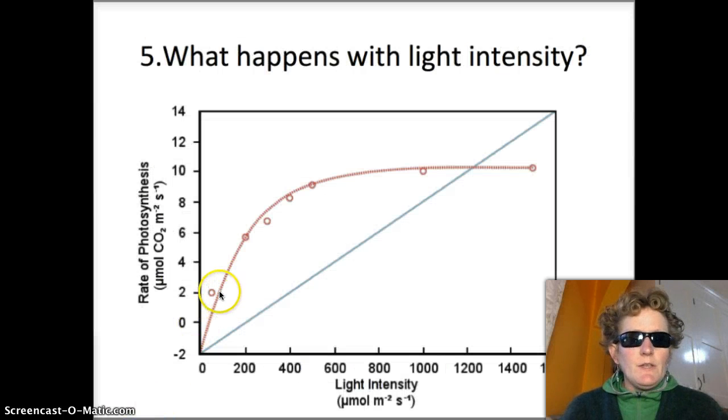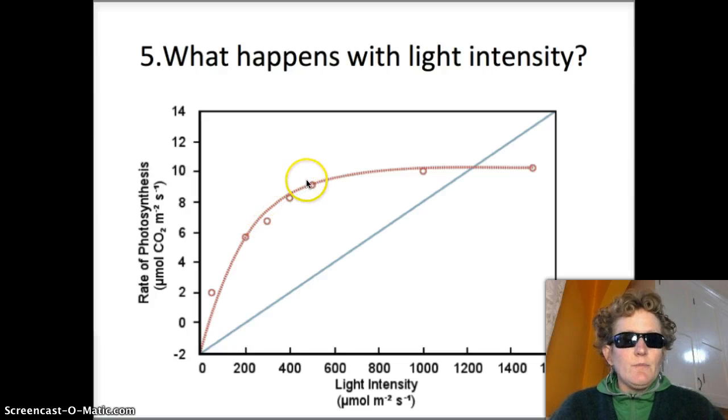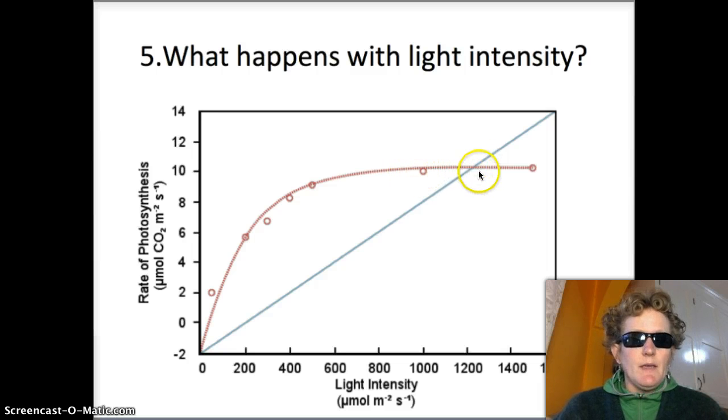Here's a graph that shows us that as you increase light intensity the rate of photosynthesis increases but only up to a point. After a while it levels off. Adding more light doesn't make it go up anymore. Here scientists were measuring the amount of CO2 that was used. They were looking at the reactants in the equation. We were looking at the products, the oxygen.